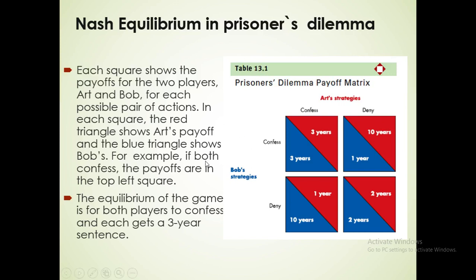These are all the outcomes. If Bob confesses — shown in blue strategy — and Art denies — shown in red strategy — then Art gets 10 years and Bob gets 1 year. If Art confesses and Bob denies, then it is vice versa: Art gets 1 year and Bob gets 10 years. If both confess, both get 2 years. If neither confesses, both get 2 years as well.